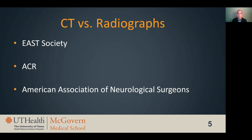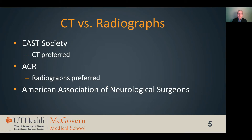How should children be initially imaged? There is debate about the appropriateness of CT versus radiographs in initial imaging, with several major societies weighing in. The East Society, one of the largest trauma societies in the United States, advocates CT as the first line of assessment in all trauma patients regardless of age, while the ACR generally says radiographs are preferred over CT for initial assessment. A couple of major neurosurgical societies have split the difference, stating CT or radiographs are equivalent in initial trauma assessment.